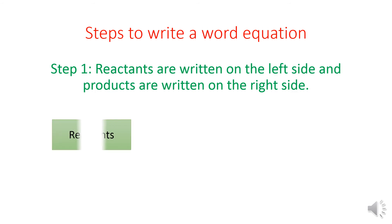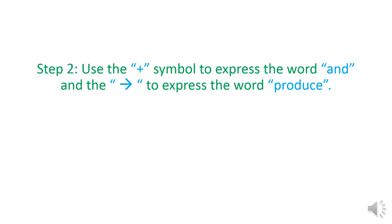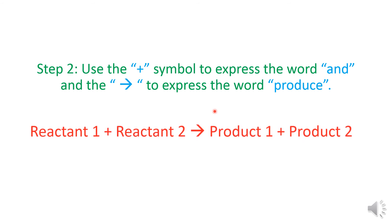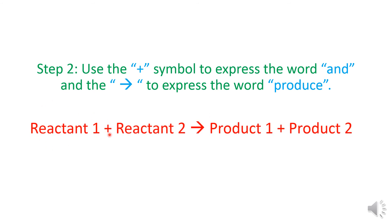Step two: use the plus symbol to express the word 'and', and an arrow to express the word 'produce'. So the format is: reactant one plus reactant two, then an arrow meaning 'produces', followed by product one and product two.